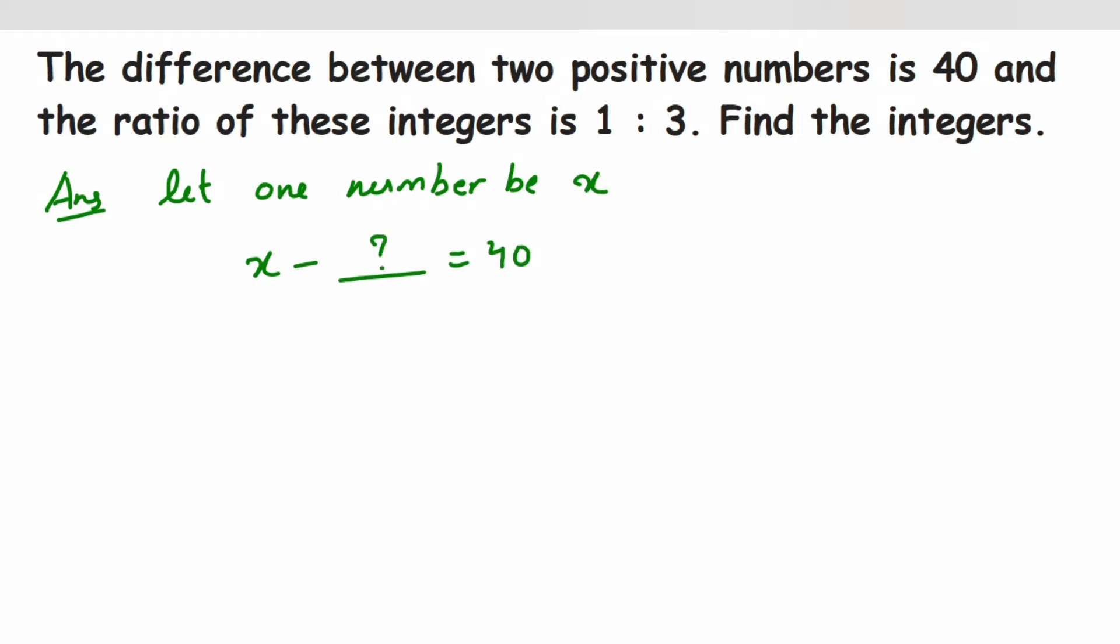We'll transpose 40 to this side and the other number to the other side. This will become x minus 40 equals the number which we have to find out.